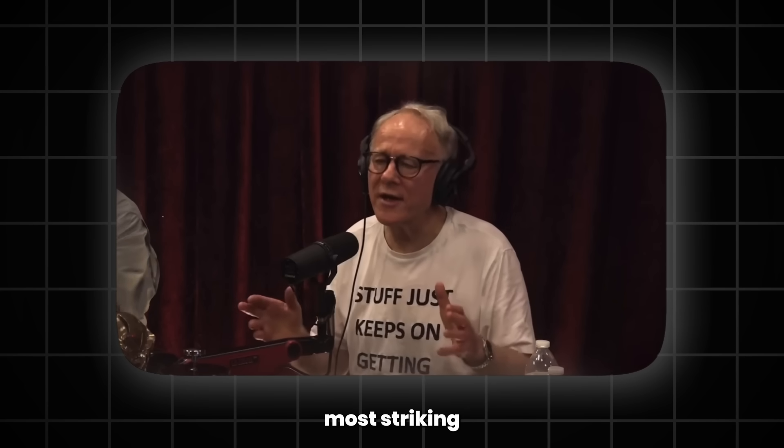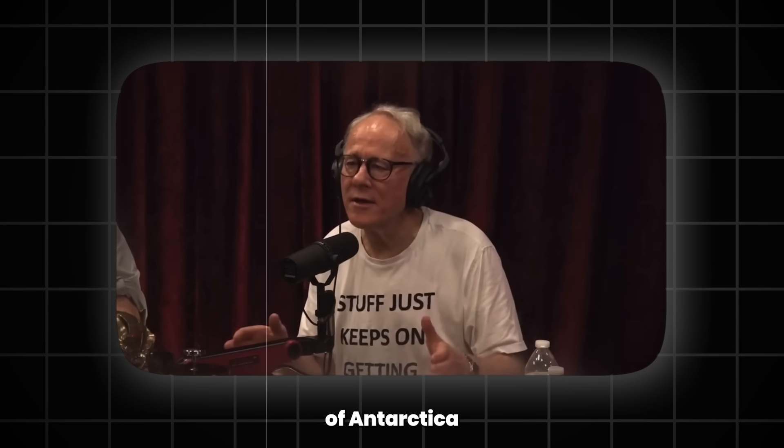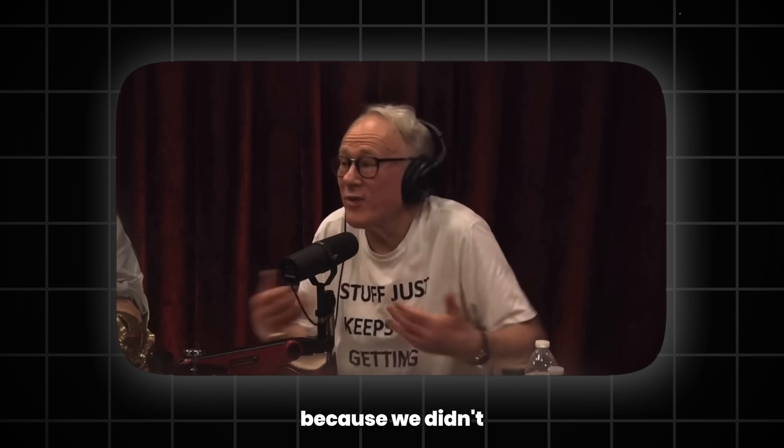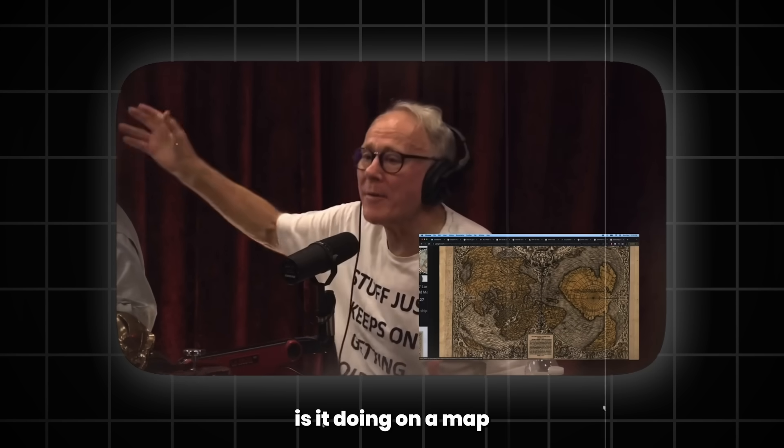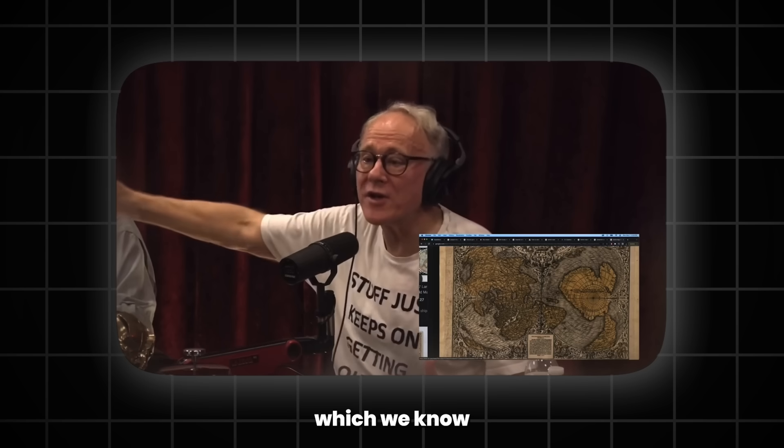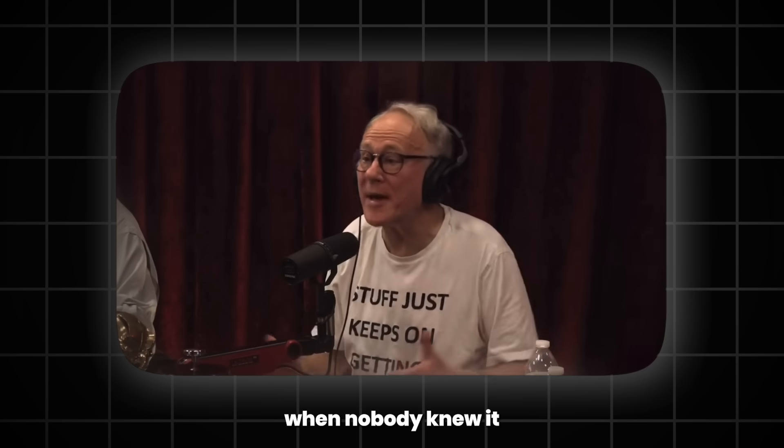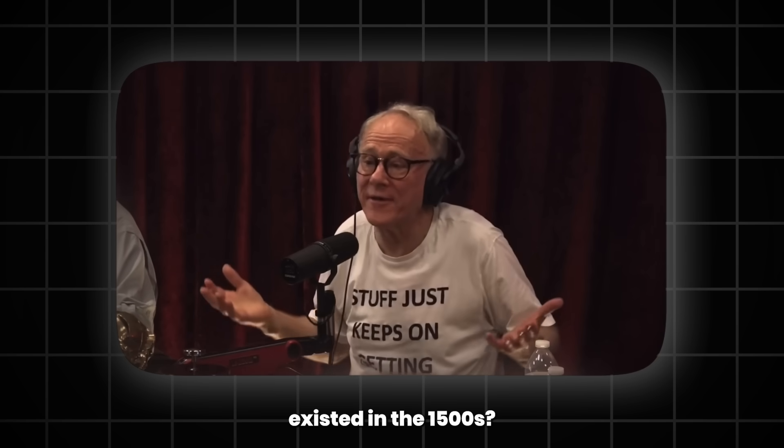One of the things I find most striking is the presence of Antarctica on ancient maps because we didn't discover it until 1820. What is it doing on a map drawn in the 1500s which we know was based on older source maps when nobody knew it existed?